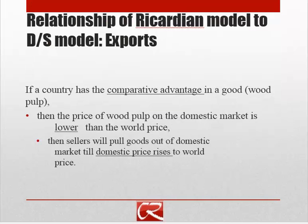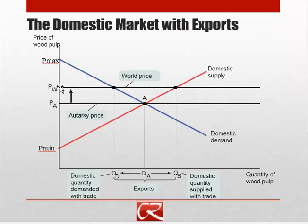Once sellers have the opportunity to sell on the world market, they're going to pull their supplies off the domestic market and sell them on the world market for that higher price. That's going to cause prices to rise in the domestic market as there's less being supplied. This keeps happening until the domestic price rises to the world price. So a country is going to export if the world price is above its autarky price, and in the process of beginning exports, the domestic price is actually going to rise up to that world price.